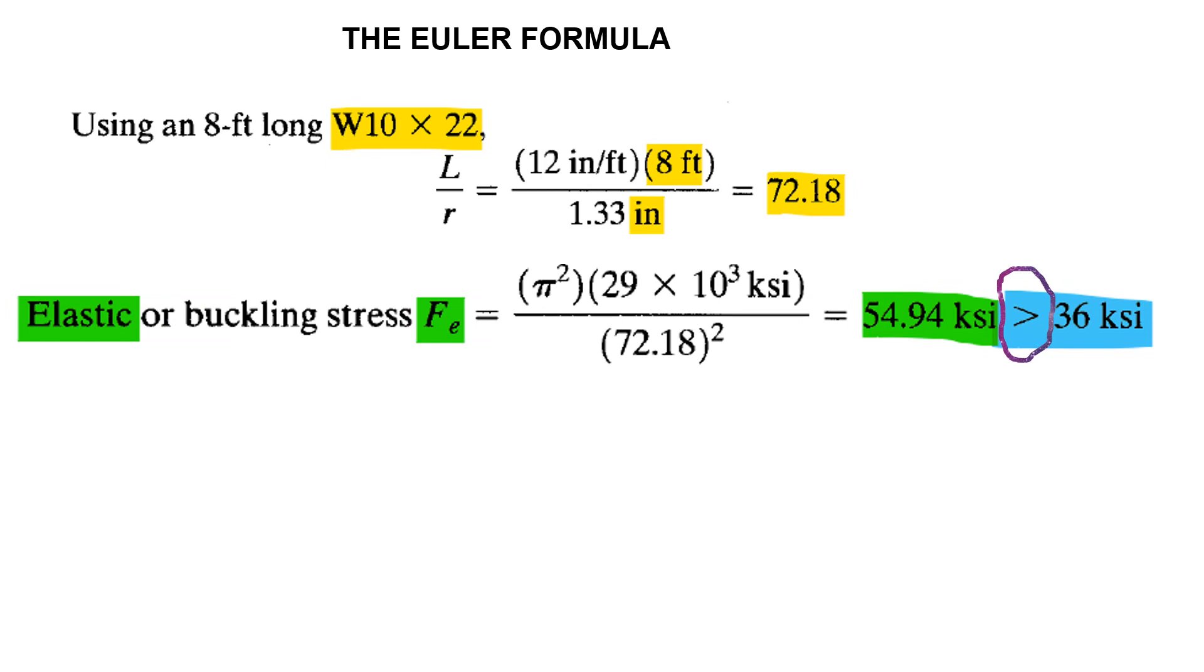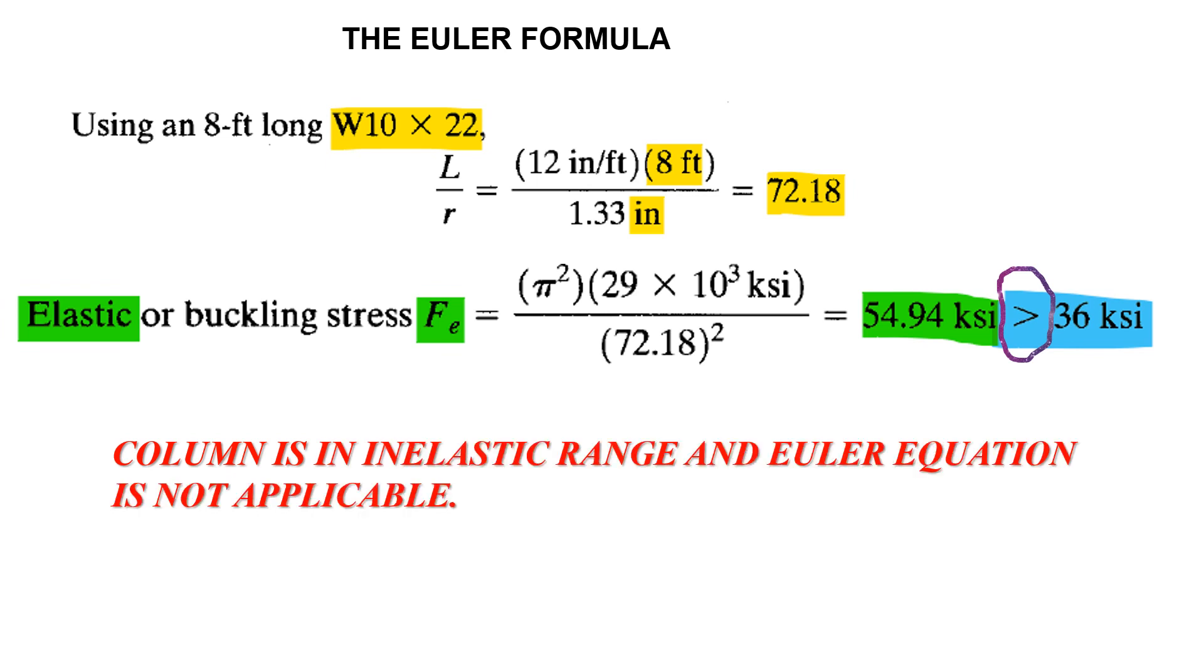The elastic or buckling stress is π squared E by L by r squared, which becomes 54.94 KSI. This is greater than the proportionality limit of 36 KSI, so the column is in the inelastic range and the Euler equation is not applicable.